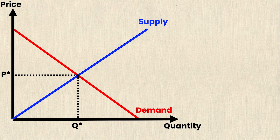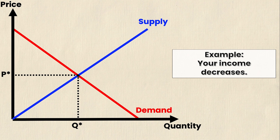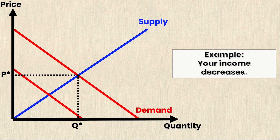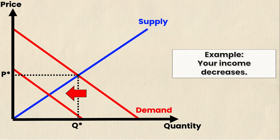Now let's introduce what we would call a negative demand shock. In this case our example is your income decreases. If your income decreases then your demand would also have to fall, and therefore we would shift the demand curve to the left as you see here, and we would denote this new demand curve as demand prime, which tells you it's the new demand and not the old demand.